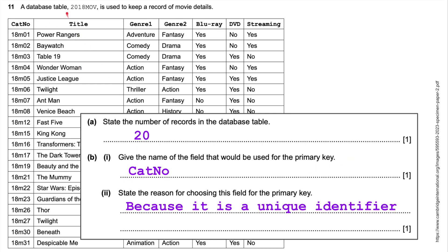We have a database with films inside it. 2008 movies is used to keep a record of movie details. It's got a catalog number, title, genre, genre 2, Blu-ray, DVD, and whether it's streamed or not. State the number of records in the database. We basically count all the rows, not this top row, but all the rows. And there are 20 of them. Give the name of a field that would be used for a primary key. It would be this first one because that's a unique identifier. All these are different. State the reason because it is a unique identifier.